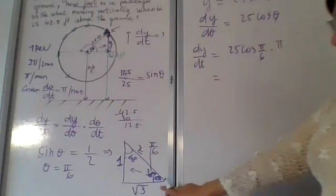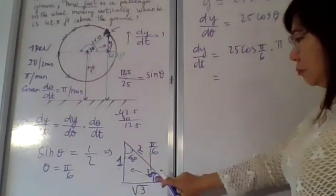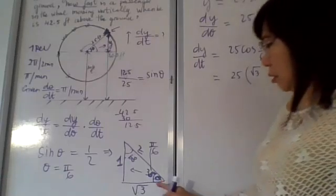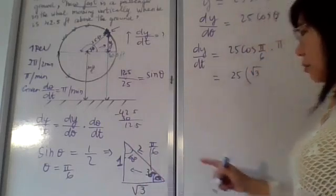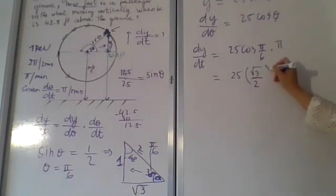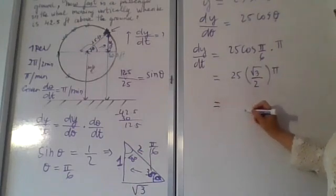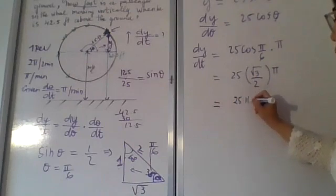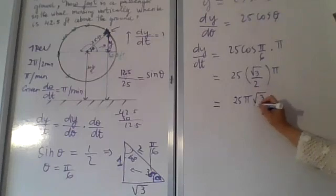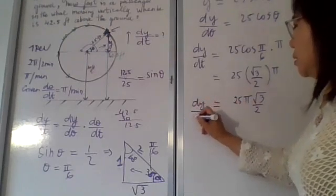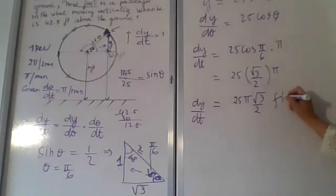Cos of π over 6 — referring back to the special triangle: cosine is adjacent over hypotenuse, so cos(π/6) equals square root of 3 over 2. Therefore dy over dt equals 25 times (square root of 3 over 2) times π, which equals 25π times square root of 3 over 2. That is the answer, with units of feet per minute.